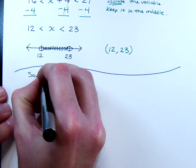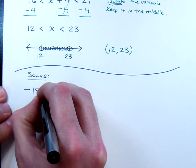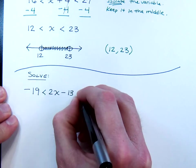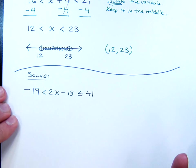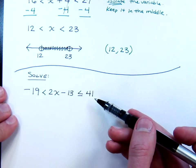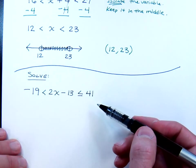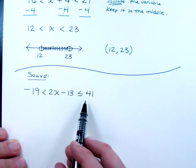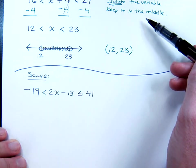Let's try this. Negative 19 is less than 2x minus 13, which is less than or equal to 41. You know what? Feel free, if you want to, to pause the video and try to solve this on your own, and then press play again and see how you compare with the answer that I get. In this compound inequality, notice that your variable stuff is in the middle. That's where it needs to stay. I already mentioned that up here. I'm just mentioning it again.